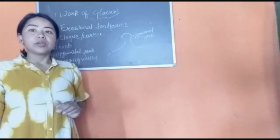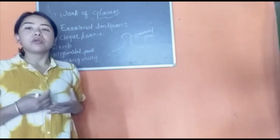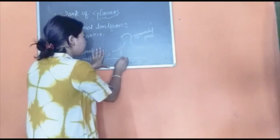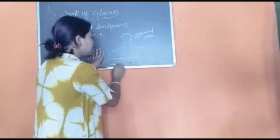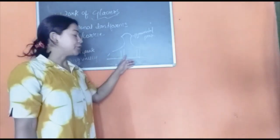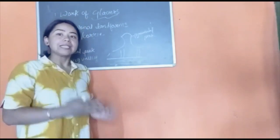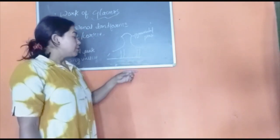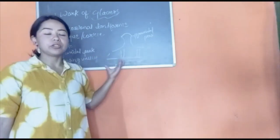In glaciated regions we have valleys through which the main ice moves, and also small tributary valleys through which a small amount of ice moves toward the main valley. The main valley carries a large amount of ice, because of which it gets eroded faster and is deeper compared to the tributary valleys which carry a small amount of ice. As a result, these tributary valleys appear to be hanging above the main valley — this type of feature is called a hanging valley.